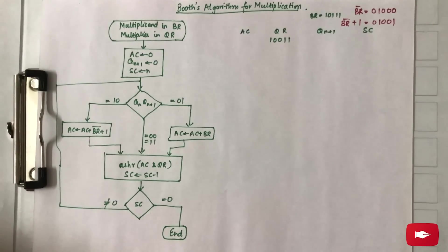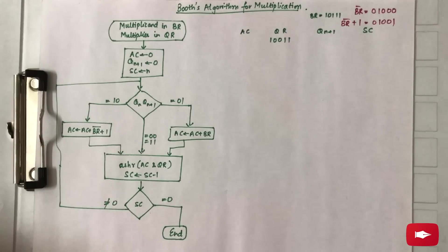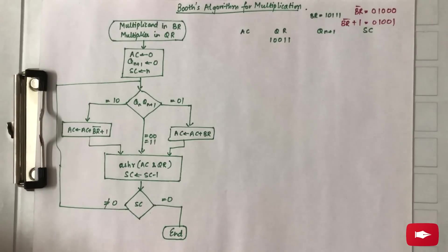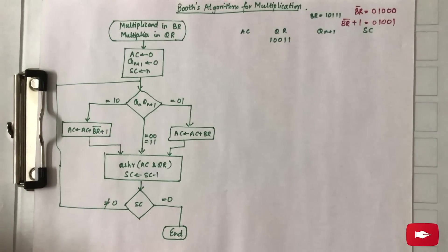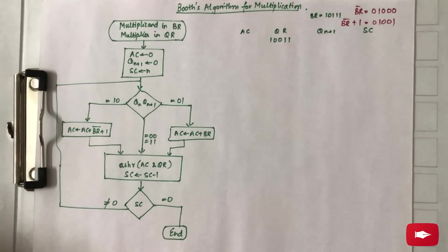The topic for this video is Booth's algorithm for multiplication, which is the second way of multiplying two numbers where the sign bit is incorporated in the number itself. In Booth's algorithm, if the numbers are given in binary simply apply the algorithm, but if given in decimal you need to find the two's complement of the negative number. If both numbers are negative, find the two's complement for both; if one is negative, find the two's complement for that particular number, then carry on with Booth's algorithm.